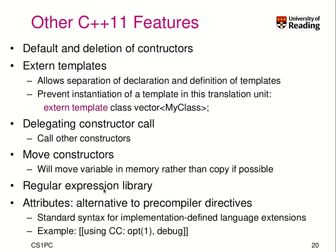There is also a regular expression library. We have attributes, which are similar to precompiler directives but more powerful — they provide a standard syntax for implementation-defined language extensions. For example, using double brackets you can specify for a C compiler an optimization level 1 and debug flags. This standardizes to some extent what kind of attributes you can set.